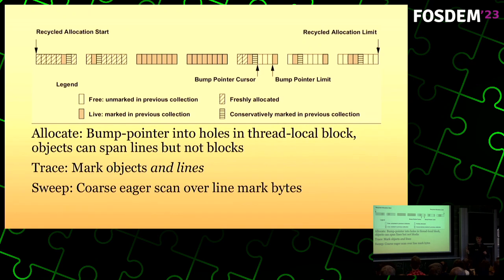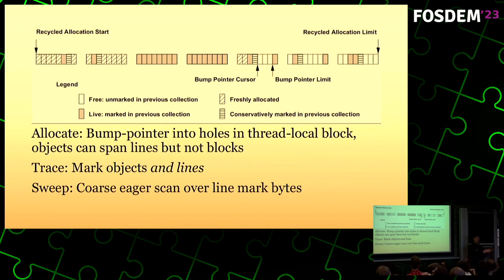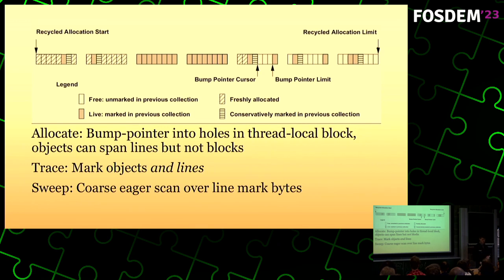When you trace, you mark objects in the same way as a mark sweep collector — there's a mark bit associated with every object, possibly in the object's header or a side table. As you mark objects you also mark the lines they're on using address math. Typically all these blocks are allocated as part of two-megabyte slabs, and you can use address arithmetic to get to a side table of mark bytes for the line. When you sweep, at the end of collection you do an eager sweep over all line mark bytes to identify which blocks are full, which are completely empty, and which are recycled.